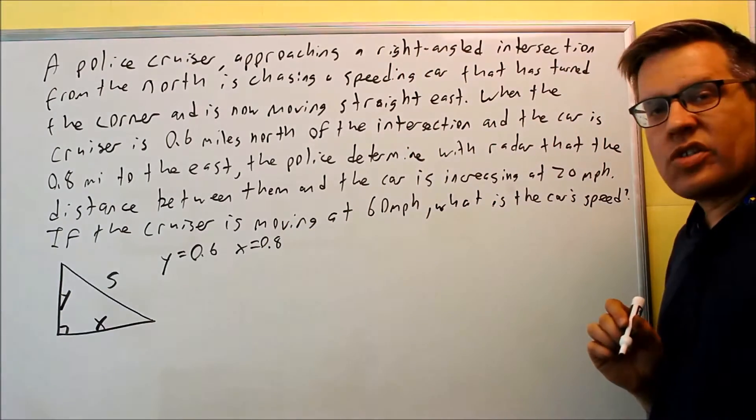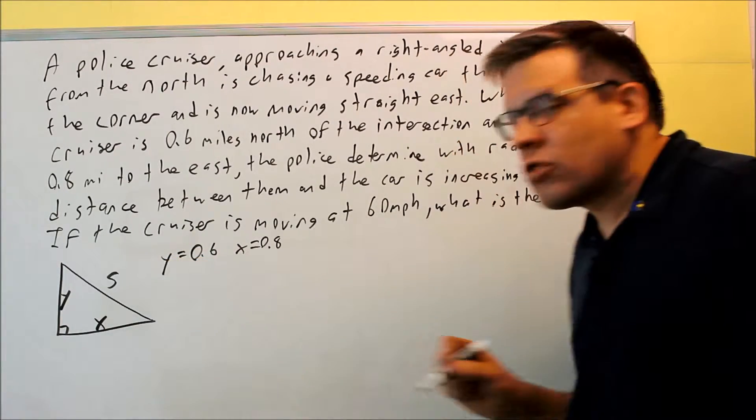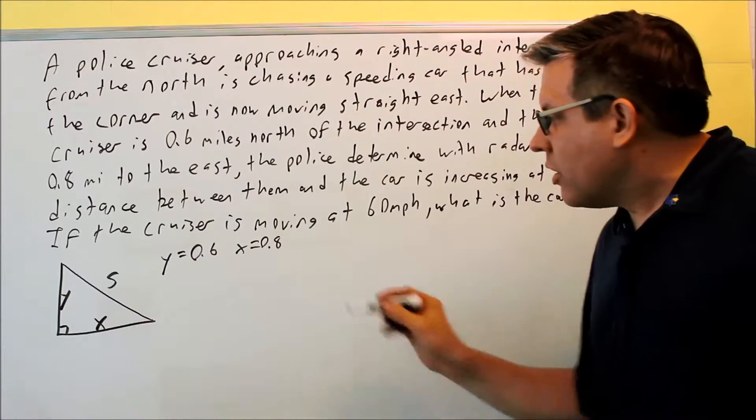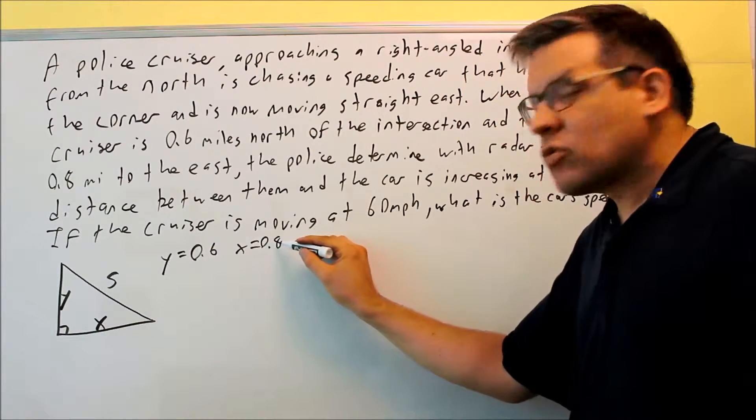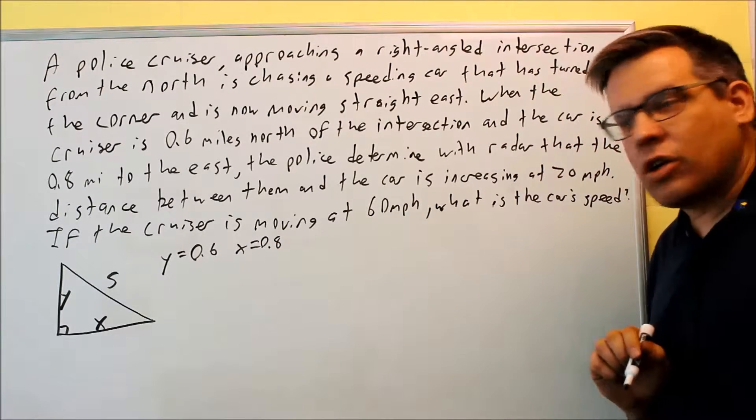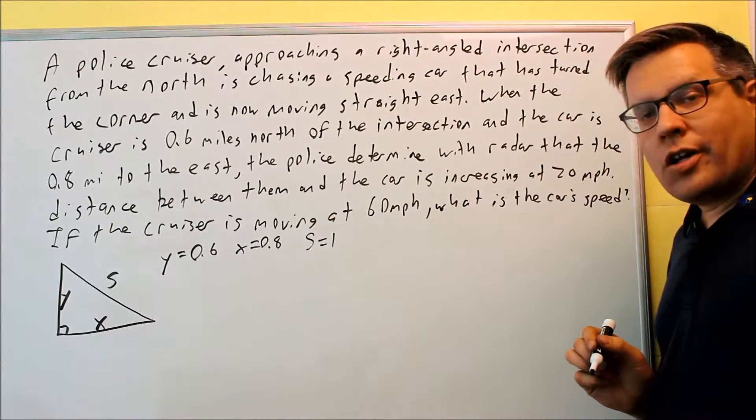Now, it doesn't tell us anything about the S, but we can figure that out with Pythagorean theorem because we have a right triangle here. X squared plus Y squared equals S squared. If we do the math in that, 0.8 squared is 0.64, 0.6 squared is 0.36. Add that together, we get a 1, so S is going to equal 1 in this case.